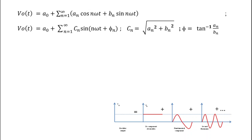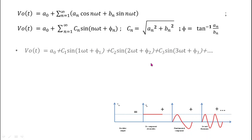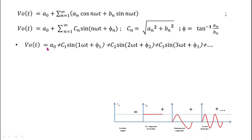Where cₙ = √(aₙ² + bₙ²) and φₙ = tan⁻¹(aₙ/bₙ). Expanding this expression by putting n = 1, 2, 3, 4, and so on, the output voltage equals a₀ + c₁ sin(ωt + φ₁) + c₂ sin(2ωt + φ₂) + c₃ sin(3ωt + φ₃) and so on.